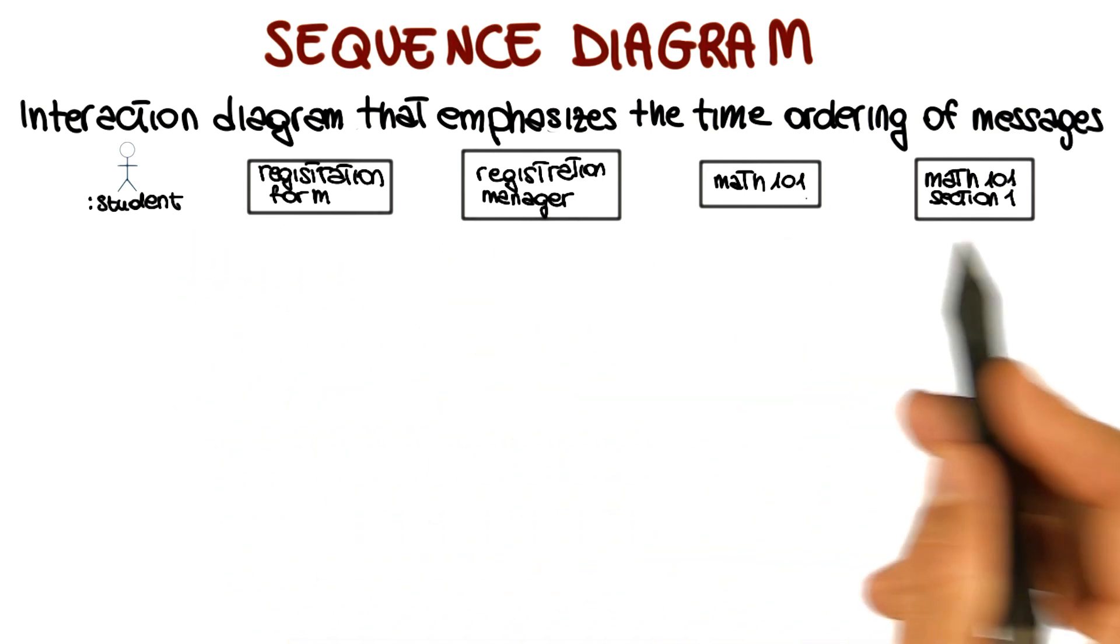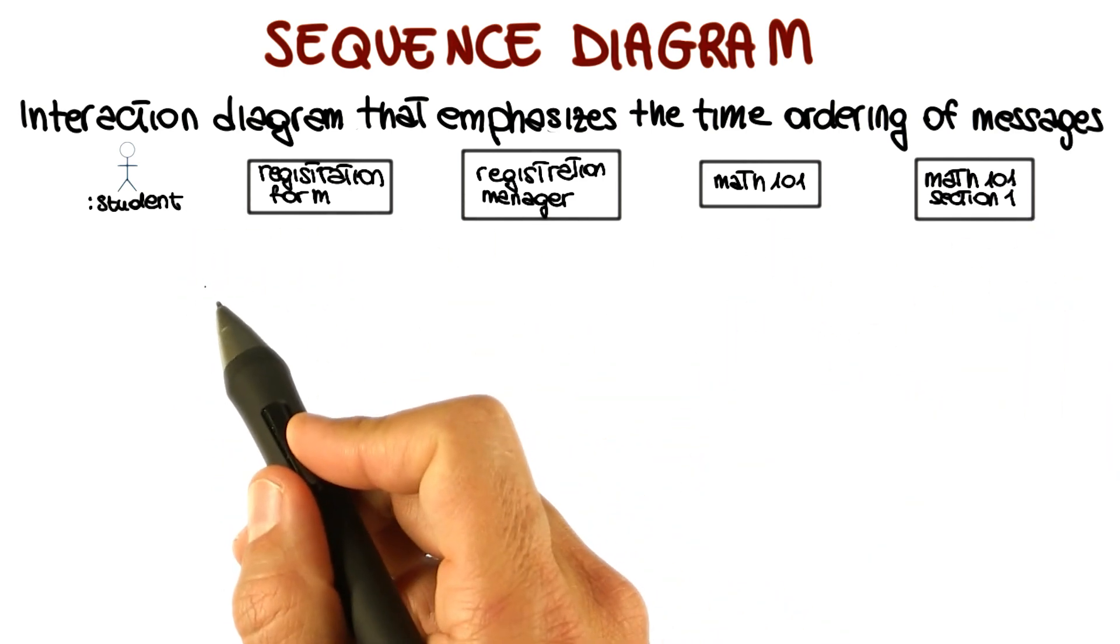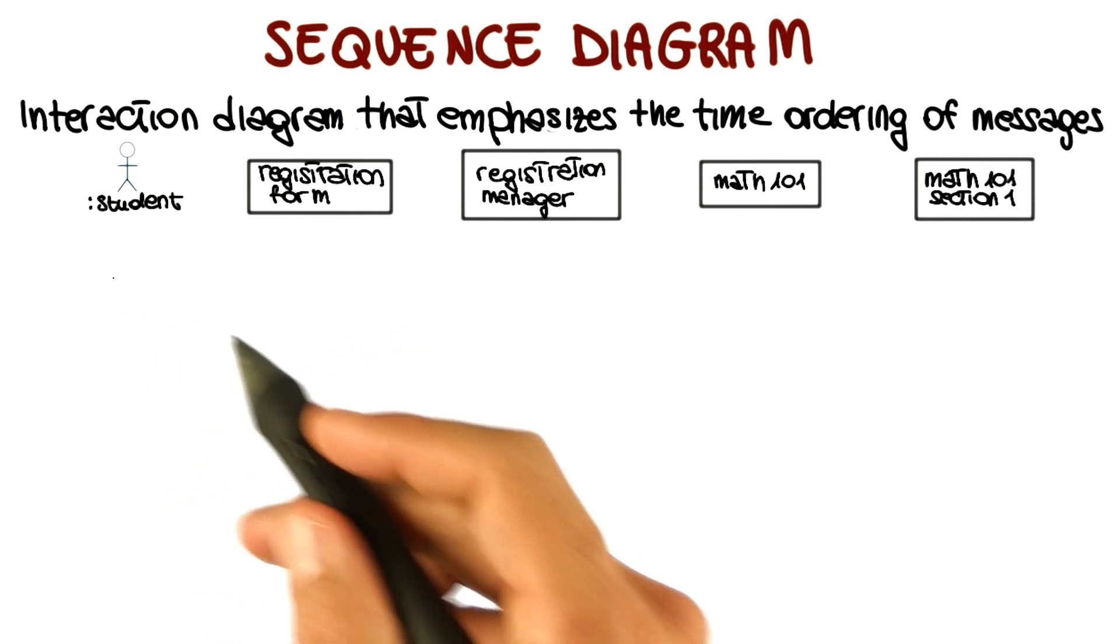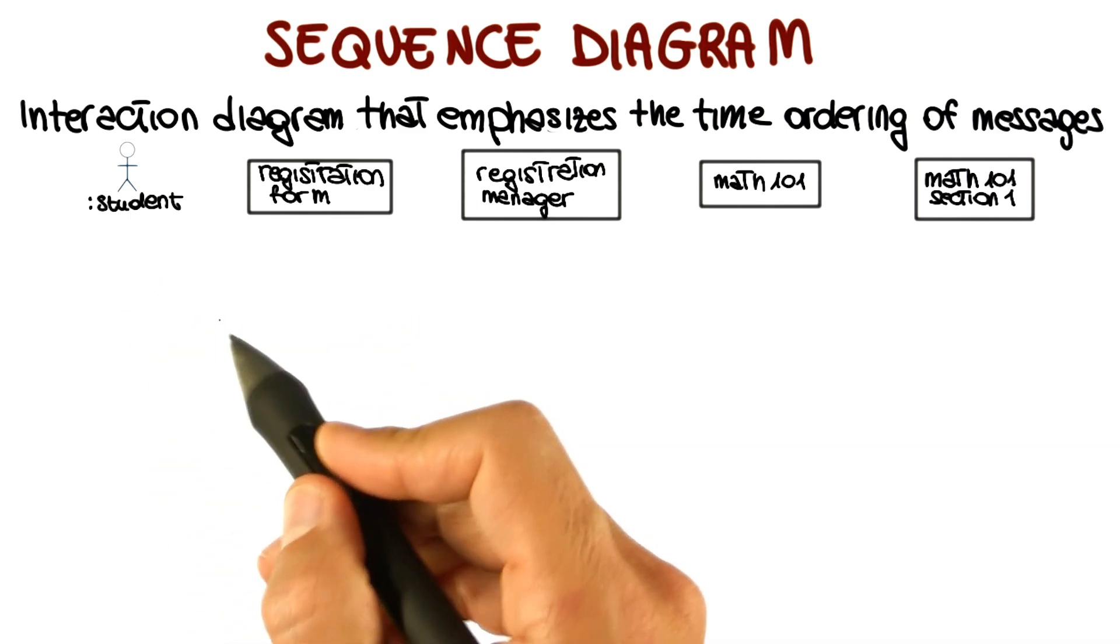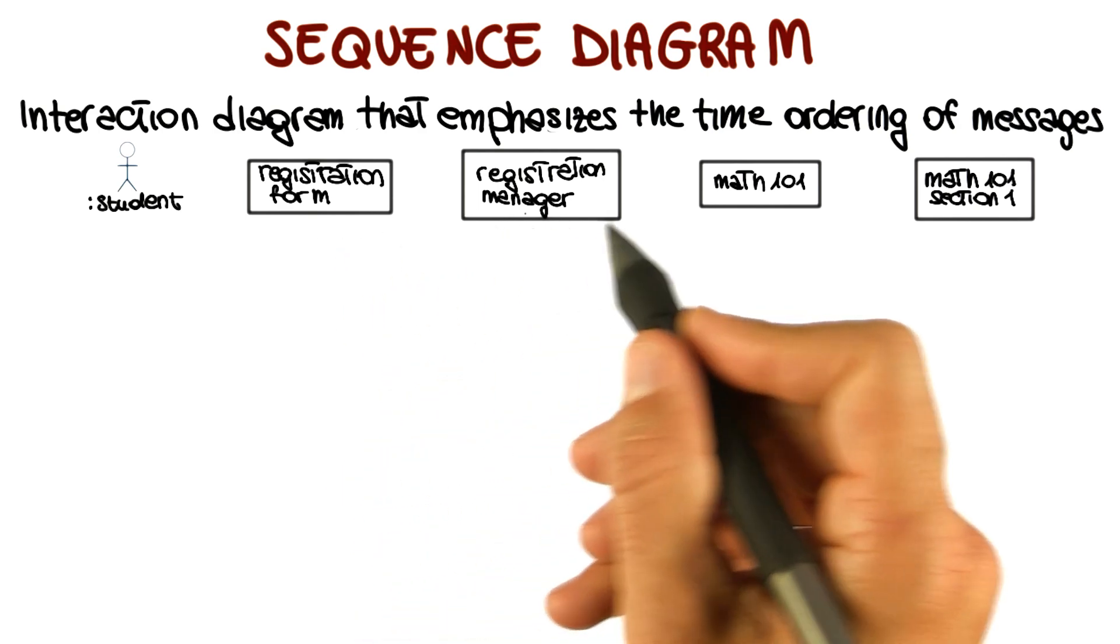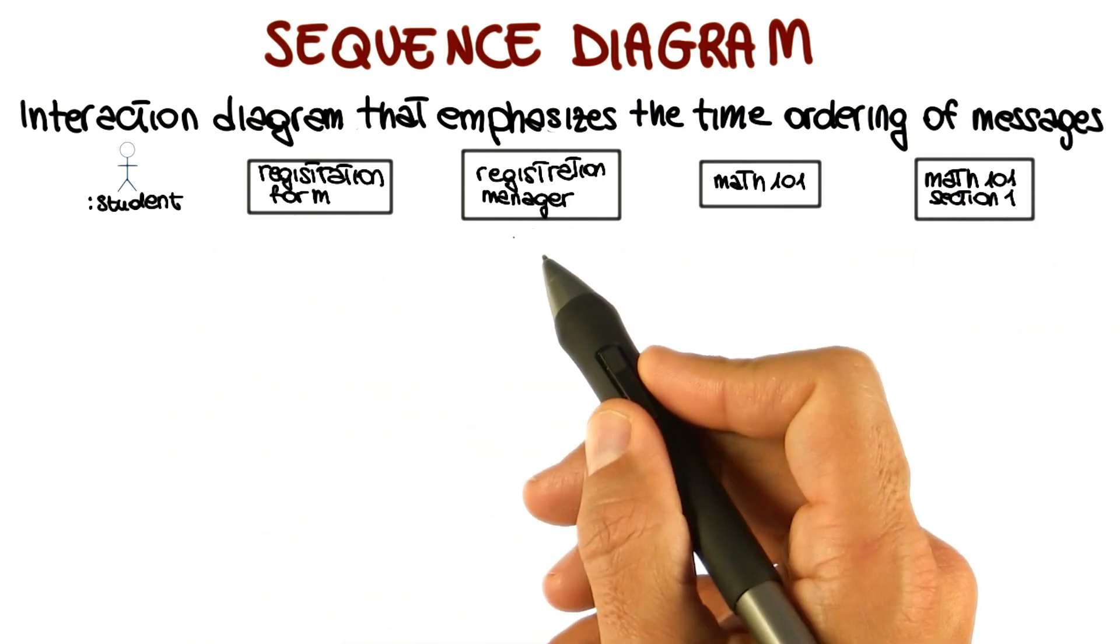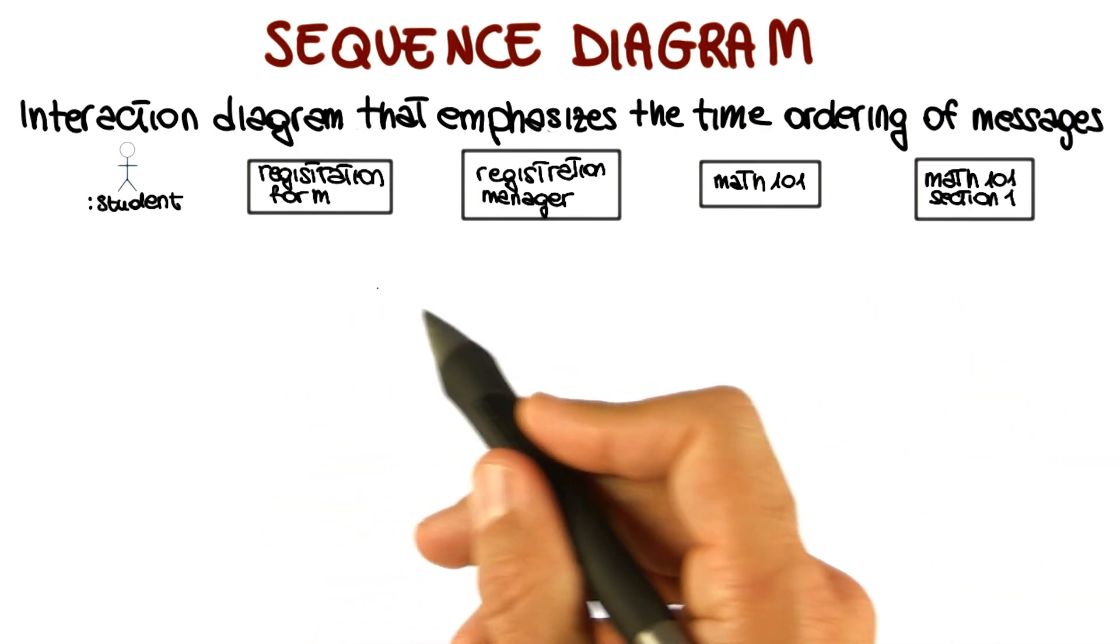The first thing you want to do is to place the objects that participate in the interaction at the top of the diagram, along the x-axis. You want to place objects that initiate the interaction at the left, and place increasingly more subordinate objects to the right. This should reflect the way the events will flow for the majority of the interactions in the system.